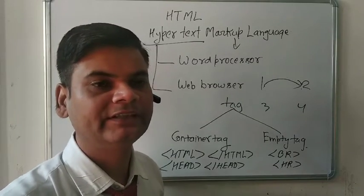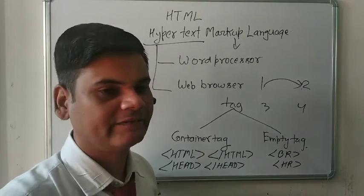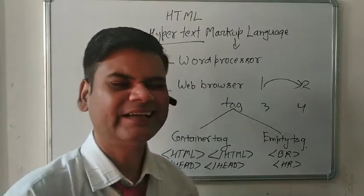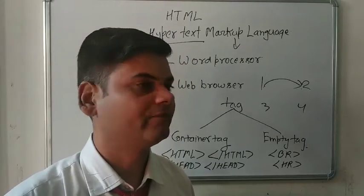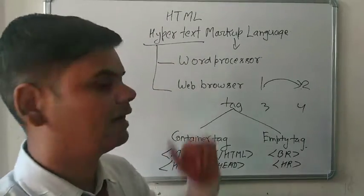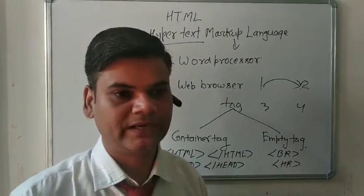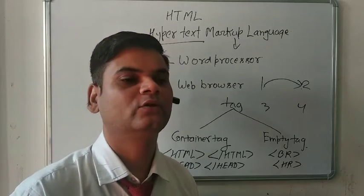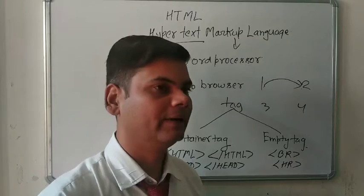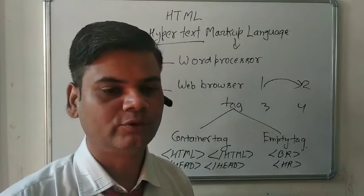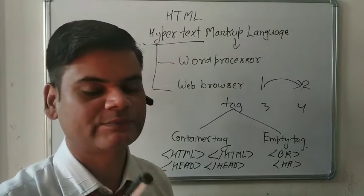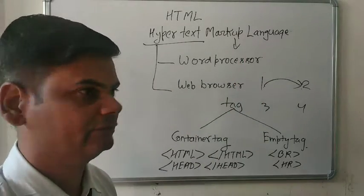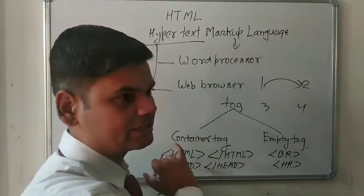The second thing is markup. Markup means if any programming language uses tags, then that language is known as a markup language. For example, we use the HTML tag, head tag, or any type of tag. This type of language is known as a markup language. Generally we use Hindi or English, which are known as natural languages, but when talking about computers, we write programs in a specific language, and that specific language is known as a programming language.